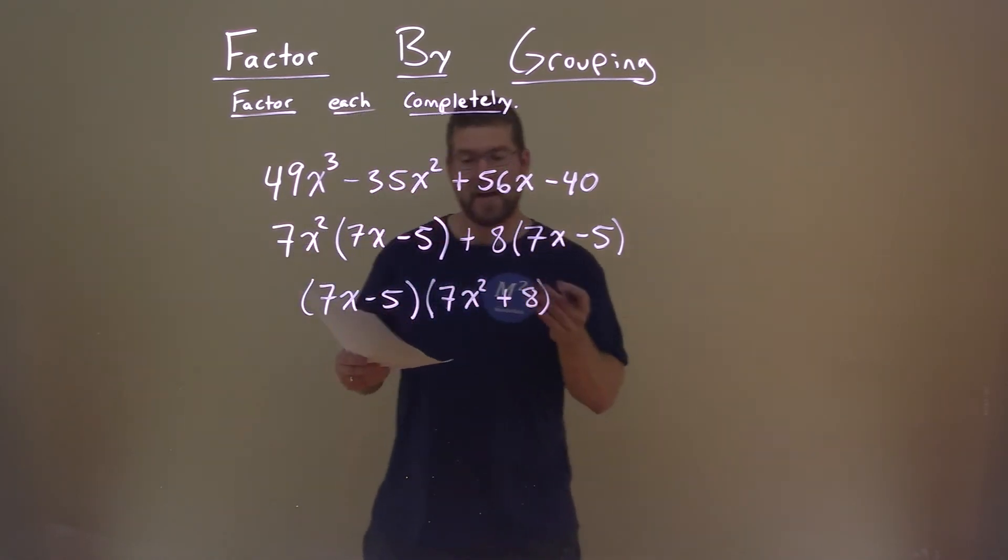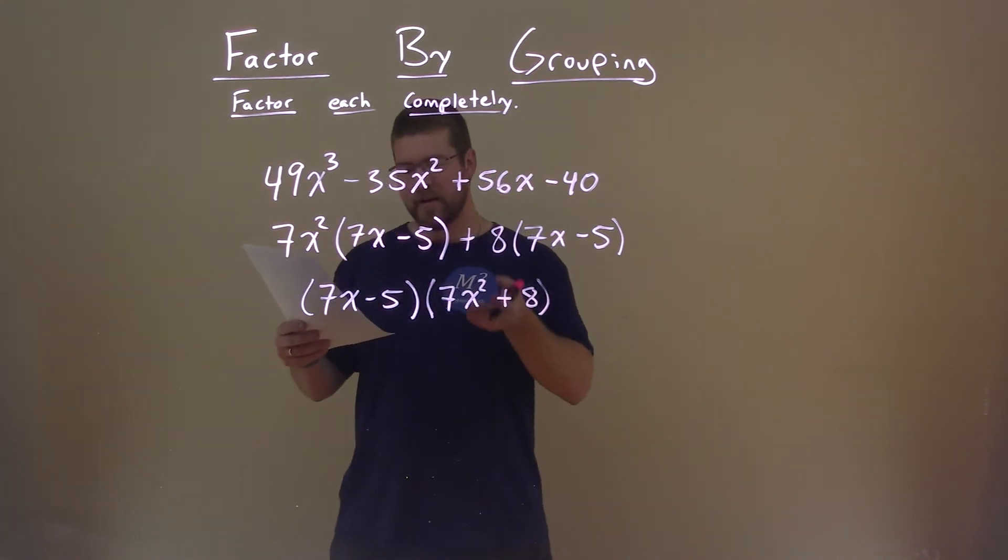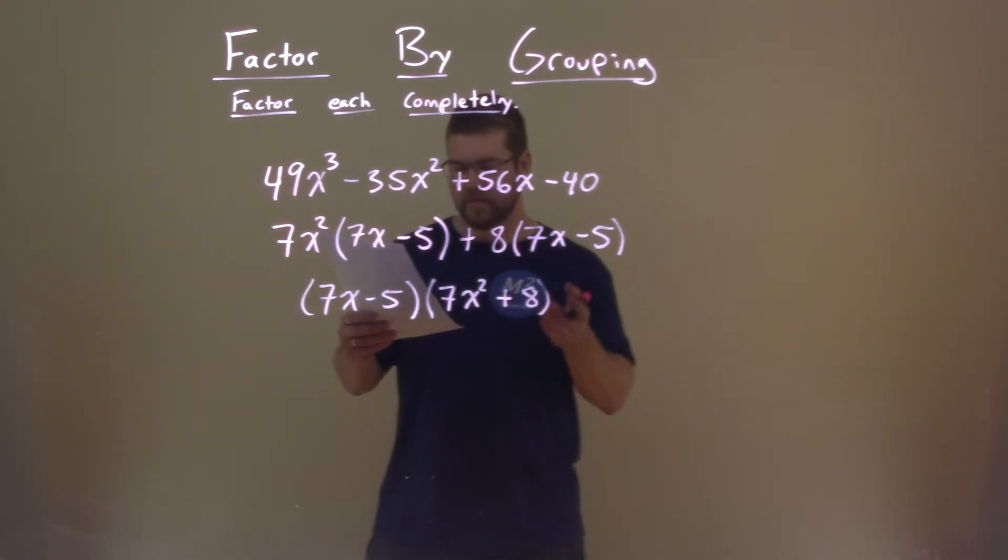And now we actually have our final answer, 7x minus 5 times 7x squared plus 8.